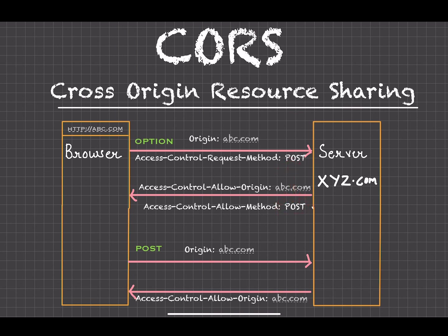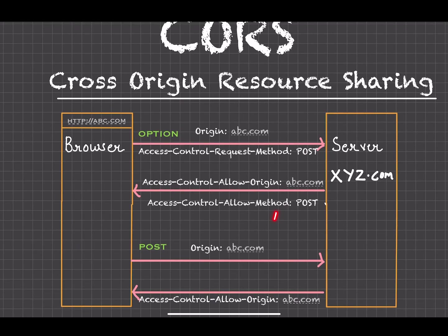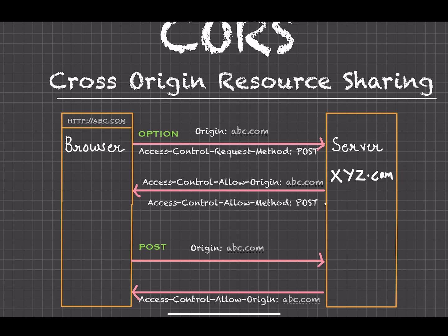The Access-Control-Allow-Methods header can be comma-separated — for example, POST, PUT, DELETE — or a single value. If it matches what was requested in the initial pre-flight, that means the server allows it. Then the browser makes the actual POST call, again sending Origin: abc.com. The server does the processing and sends the response back with Access-Control-Allow-Origin matching the origin.